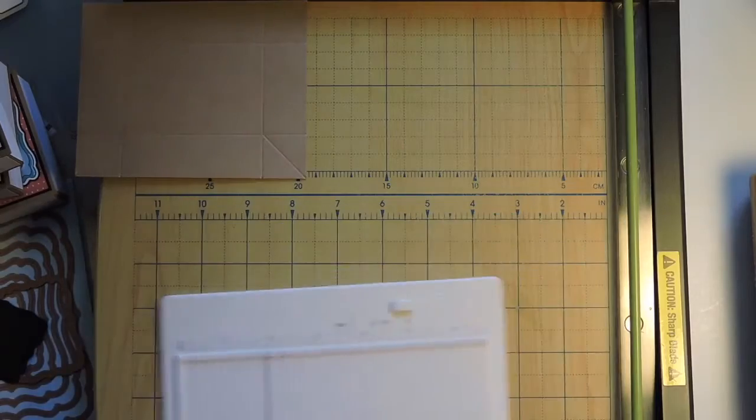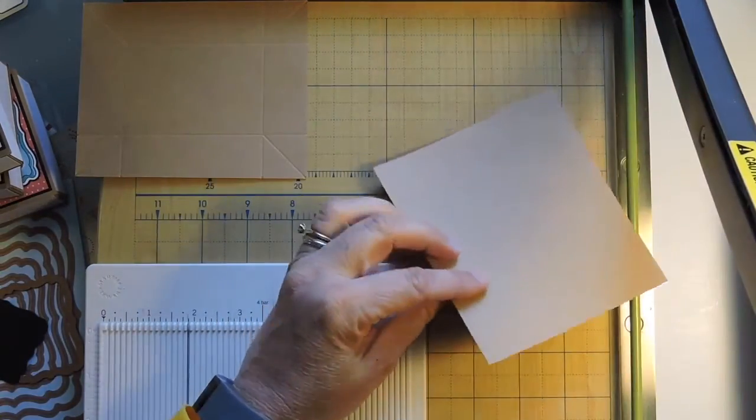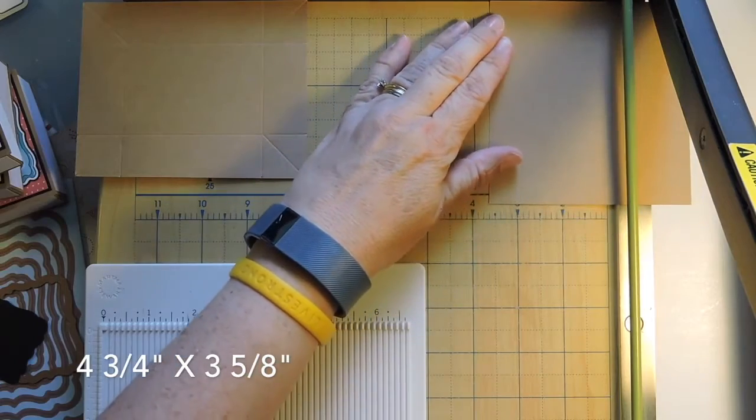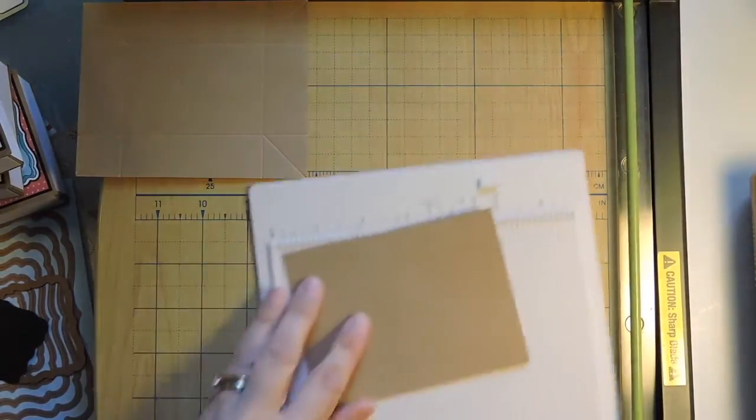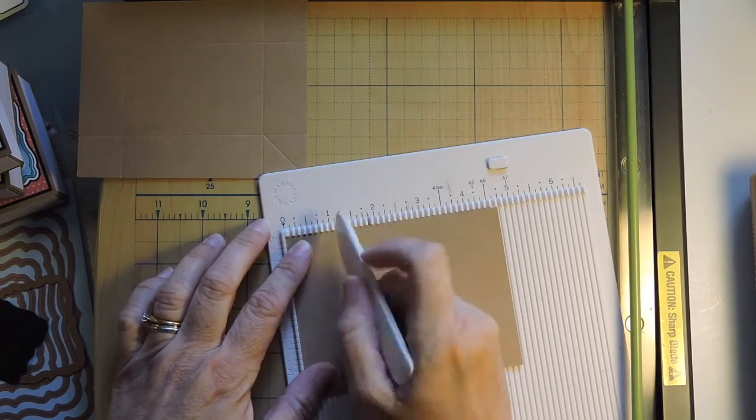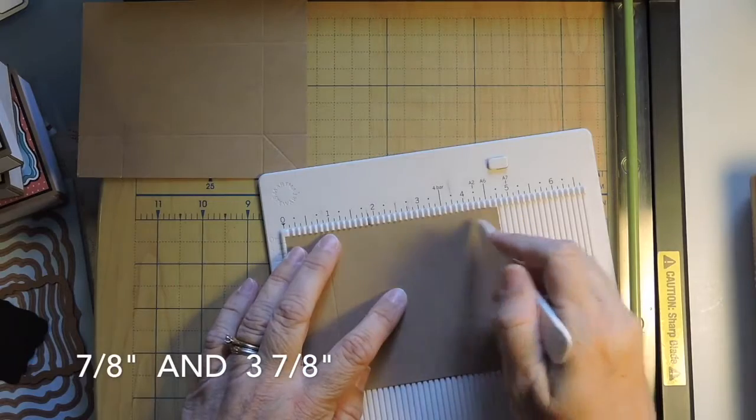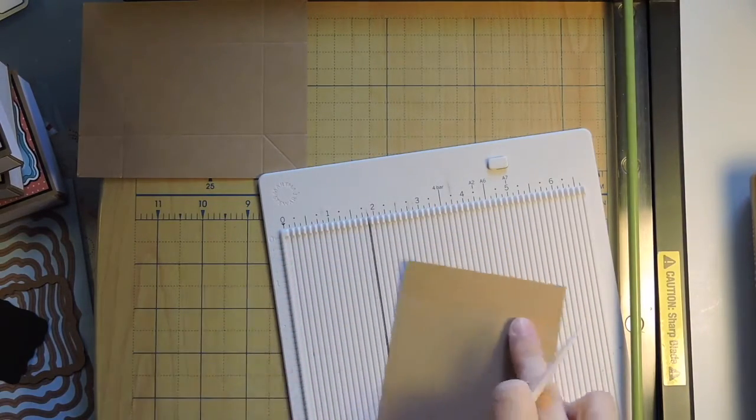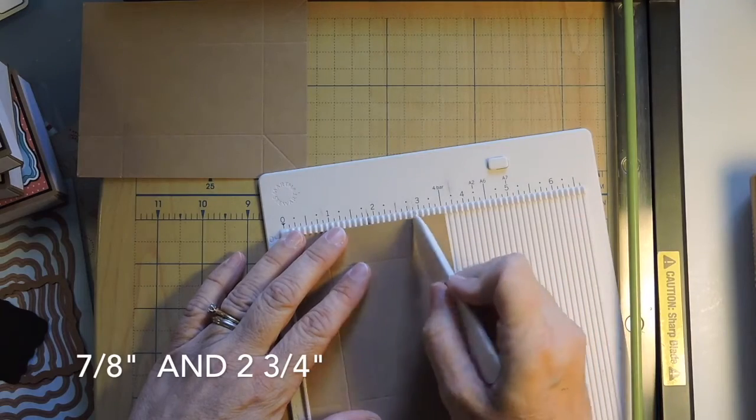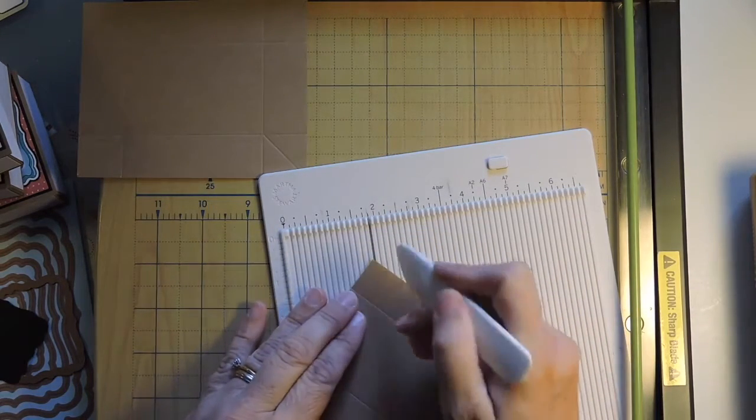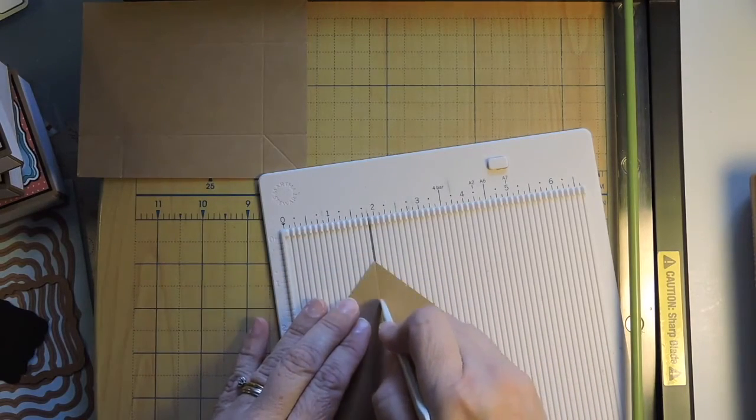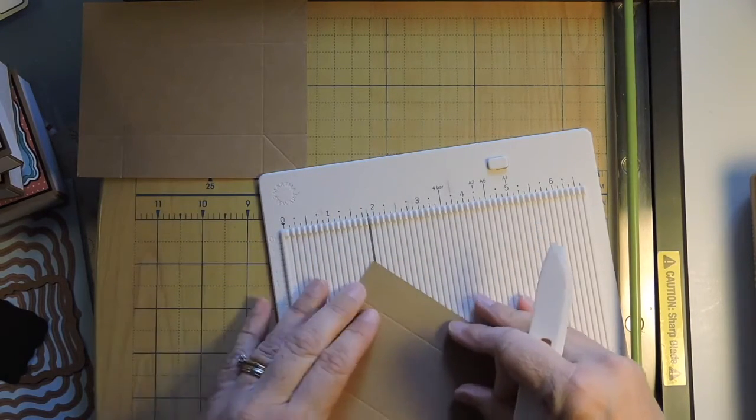So we'll just put that one aside for a minute. Take the next piece that you have, and you want this piece to be 4 3/4 by 3 5/8. Again, lay it down on your thing, going 4 3/4 along this way. And you're going to score at 7/8, and then 3 7/8. And then turn, and then we'll score at 7/8 again. And we'll score at 2 3/4. So this is the smaller side of the box. The box is actually two different sizes, and it's just so that this part fits into the larger part. So score your corners again.